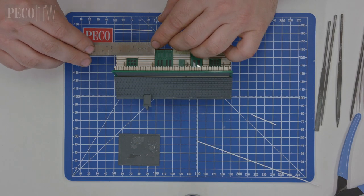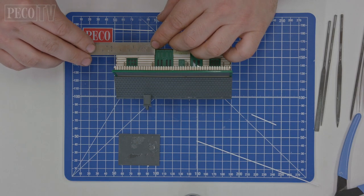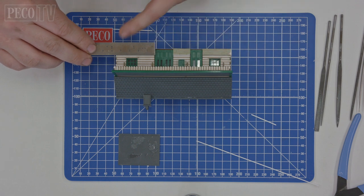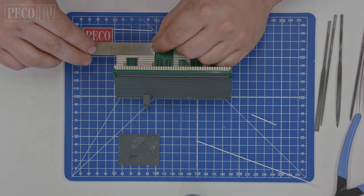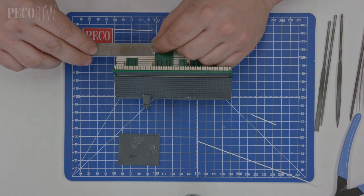Once the stonework filler has dried and been sanded then scribed to make the brickwork match you can then attach the stonewall capping using 1.5mm microstrip. Measure each section but leave a couple of extra millimeters at the corner wall end.